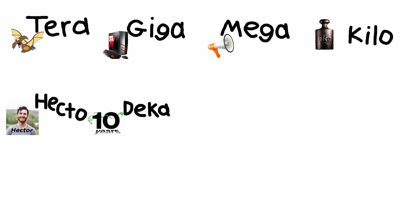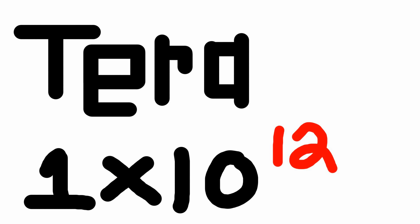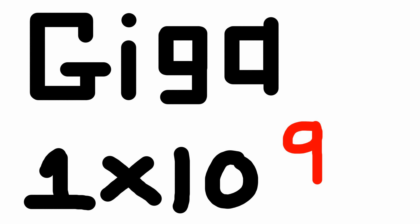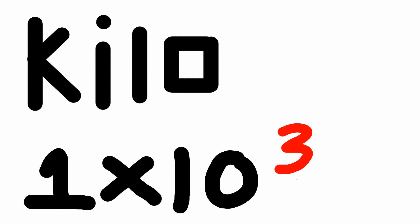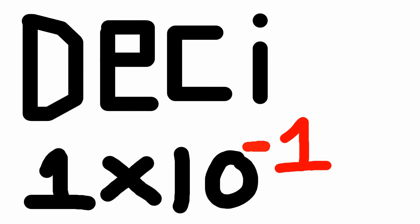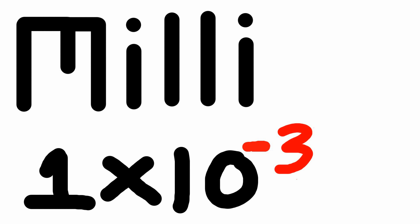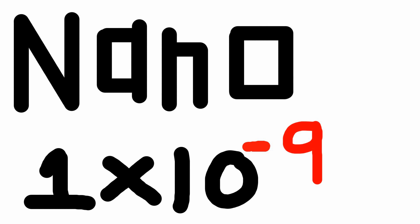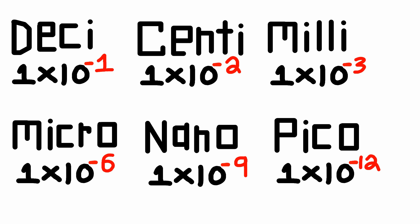And that is all the prefixes you need to know right now. Tera: 12, Giga: 9, Mega: 6, Kilo: 3, Hecto: 2, Deca: 1. Then there is base: zero. Desi: 1, Centi: 2, Milli: 3, Micro: 6, Nano: 9, Pico: 12. And those are all negatives.